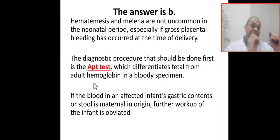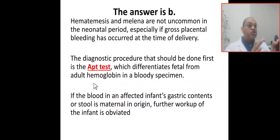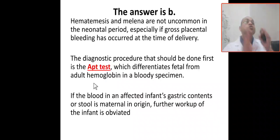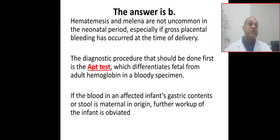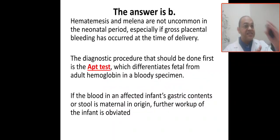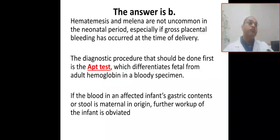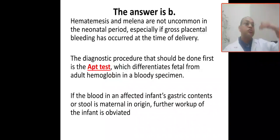If the blood is of maternal or placental origin — because it changes to yellow-brown or denatures with alkali — no further workup is required and you manage conservatively. If the blood came from the baby and fetal hemoglobin resists the alkali remaining pink, you must do further workup looking for the cause or source of the bleeding.